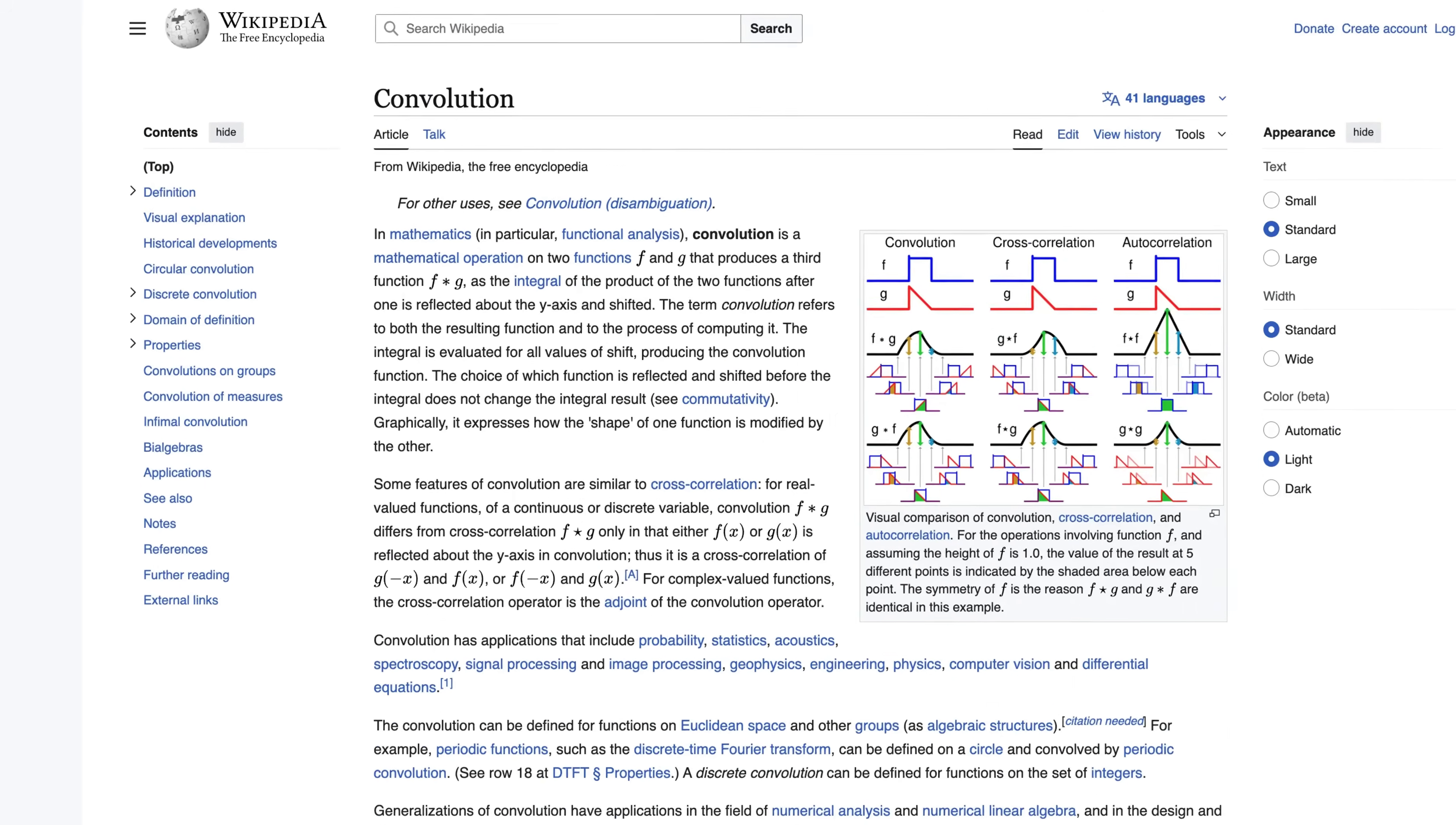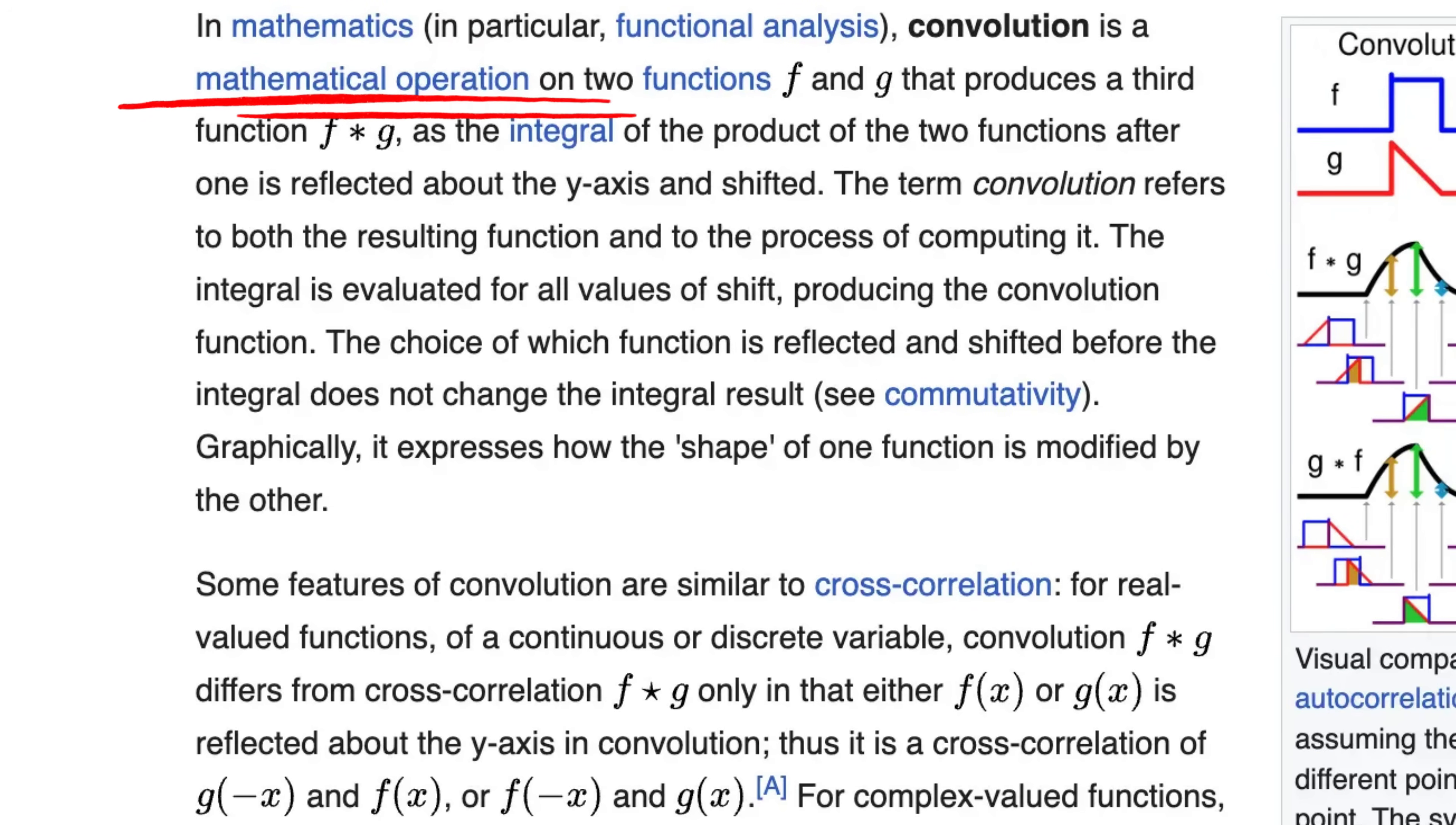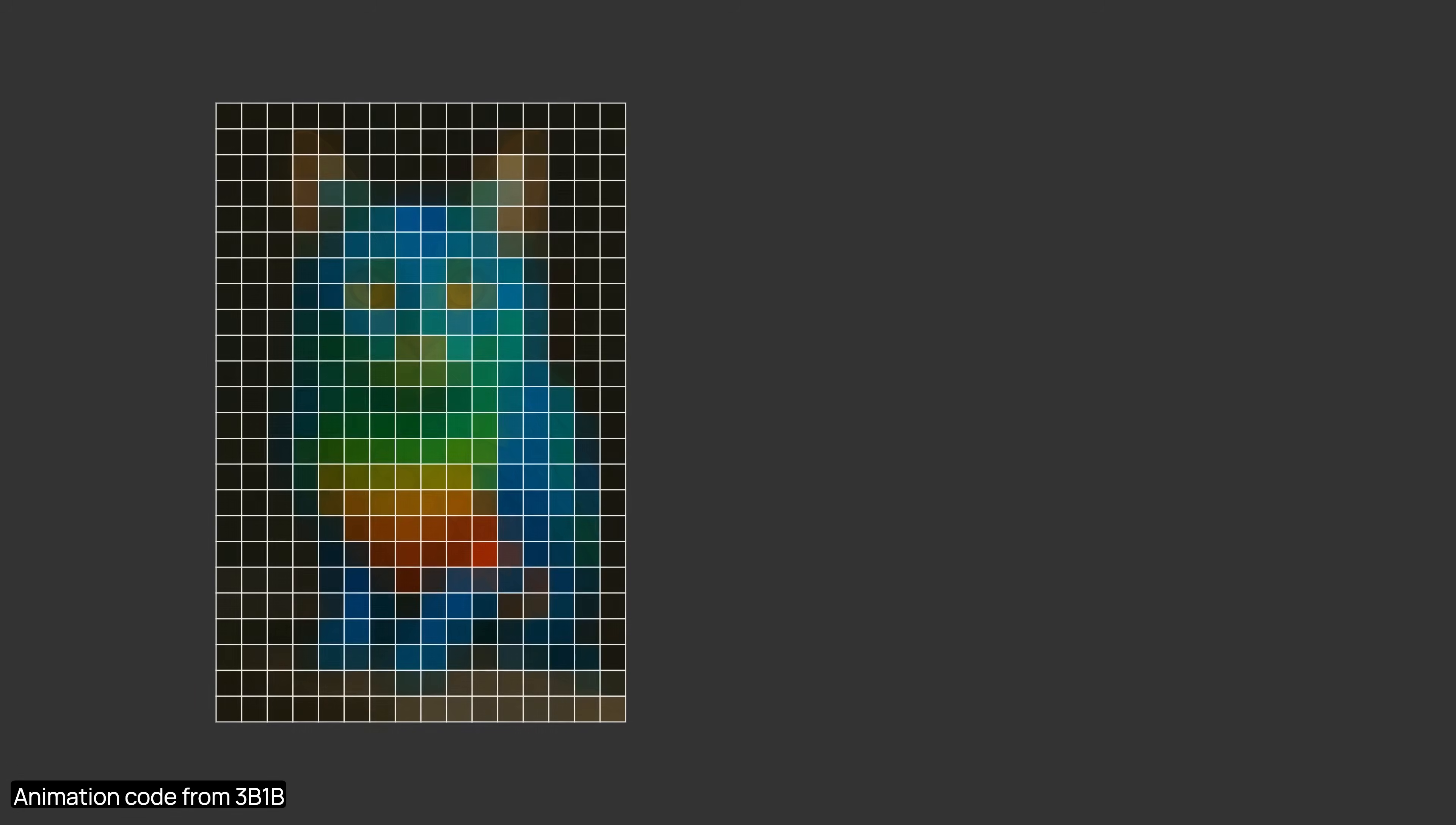The core building block of a CNN is the convolution operator, which actually predates machine learning. You can find it in math or image processing when blurring or sharpening an image. To get into the weeds of convolution, I will downsample the original image just so that we can observe every pixel.